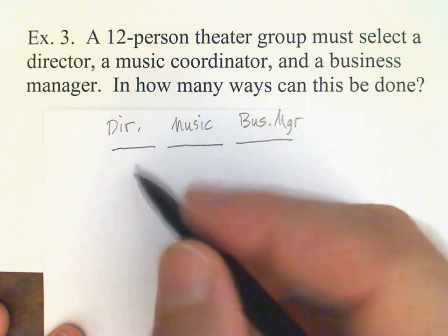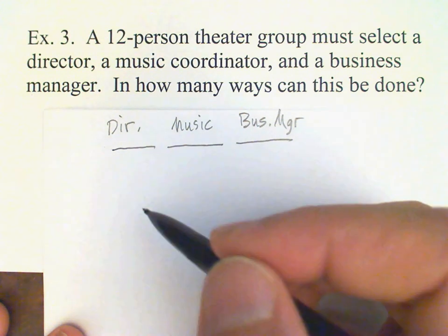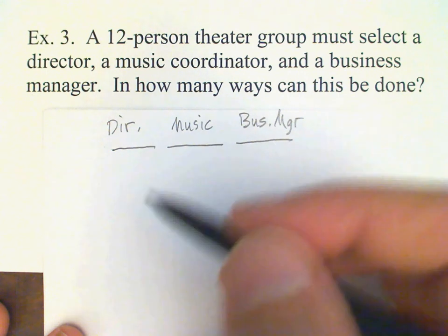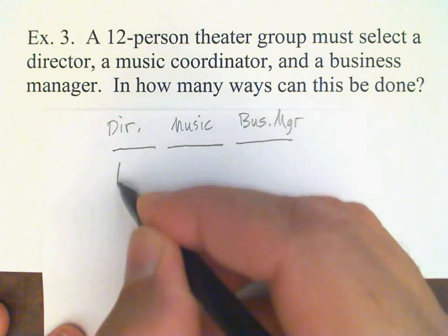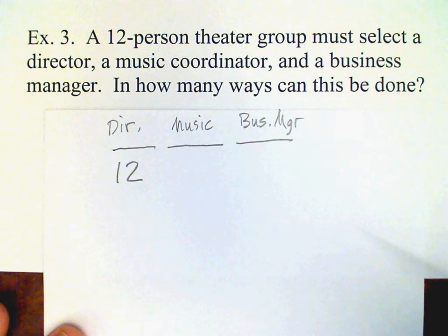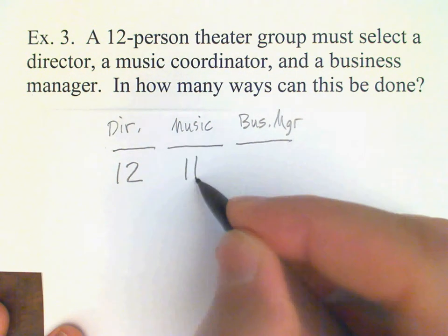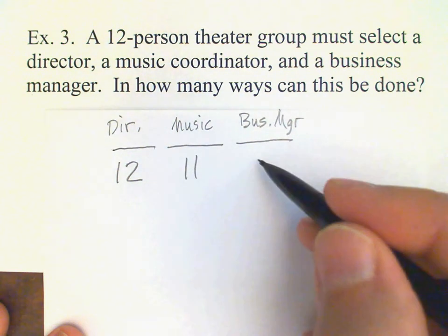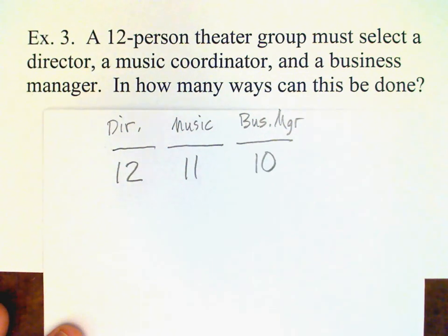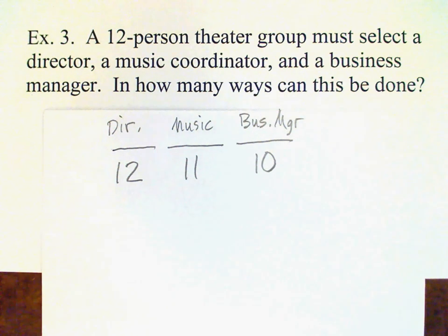Assuming that one person does no more than one job, that gives us 12 possibilities for the first slot, 11 for the second slot, and 10 for the third slot. Basically what we're doing is choosing three objects from the 12 given and arranging them in a row — and that is the permutation number.